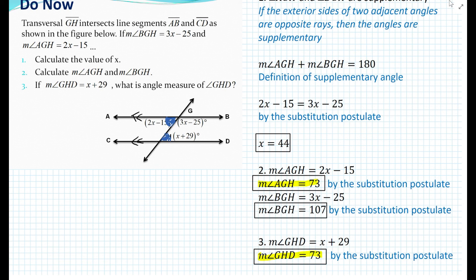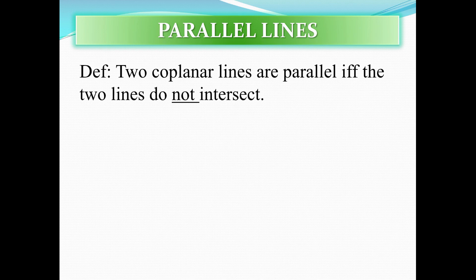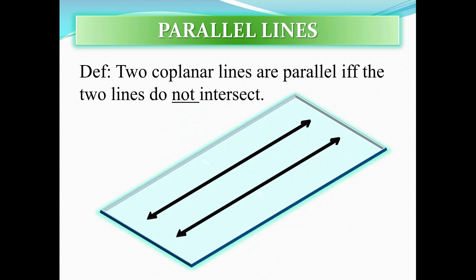Let's now define parallel lines. Two coplanar lines are parallel if and only if the two lines do not intersect. It's very important to state the term coplanar, because here we're defining parallel lines to be in the same plane. When they're not coplanar and we're talking about space, we have another type of lines that are not parallel but also do not intersect.